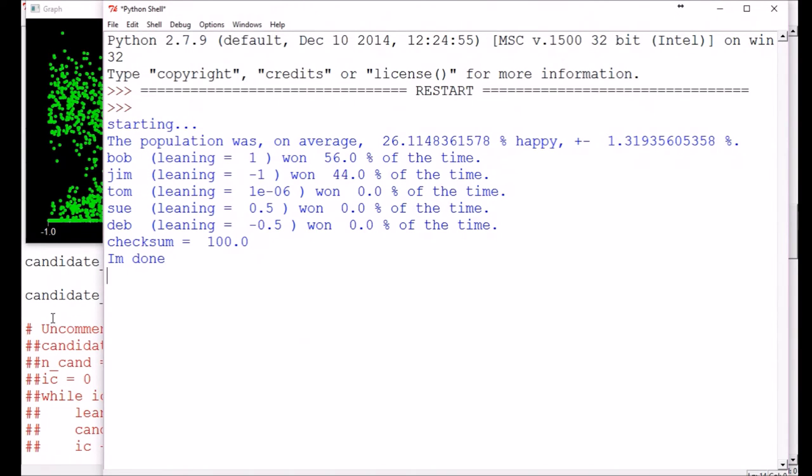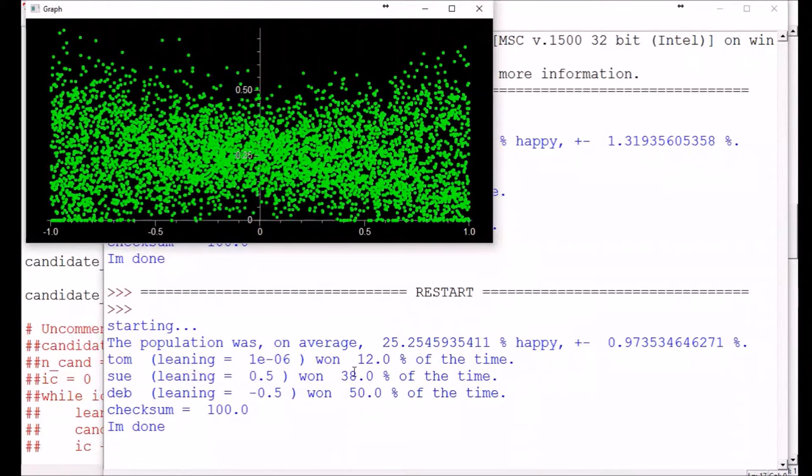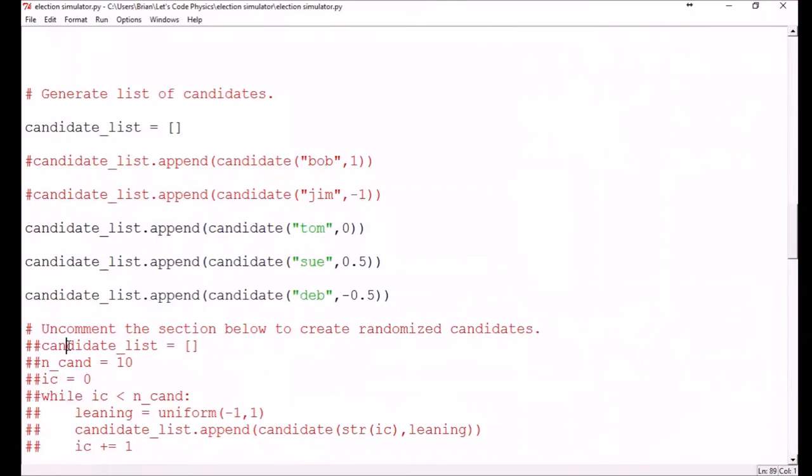We can see this effect continue if we remove Bob and Jim from the list of candidates. Now our candidates with slight political leanings take most of the wins, while Tom, our true middle-of-the-road candidate, only takes a fraction of the win. By the way, you'll notice that the average hasn't changed much. It's still right around 25%, 26%, and the shape of the graph is not terribly different.